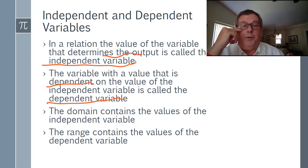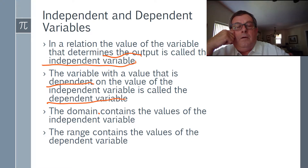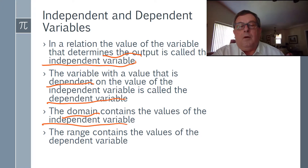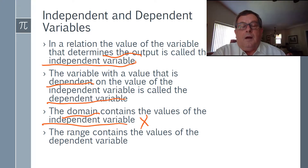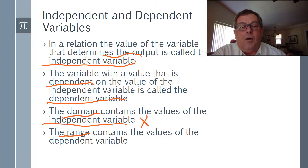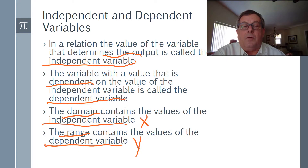In other words, the independent variable is the input and the dependent variable is the output. The domain contains the values of the independent variable — typically the x values. The range contains the values of the dependent variable — typically the y values. So the domain and independent variable correspond to x, while the range and dependent variable correspond to y.